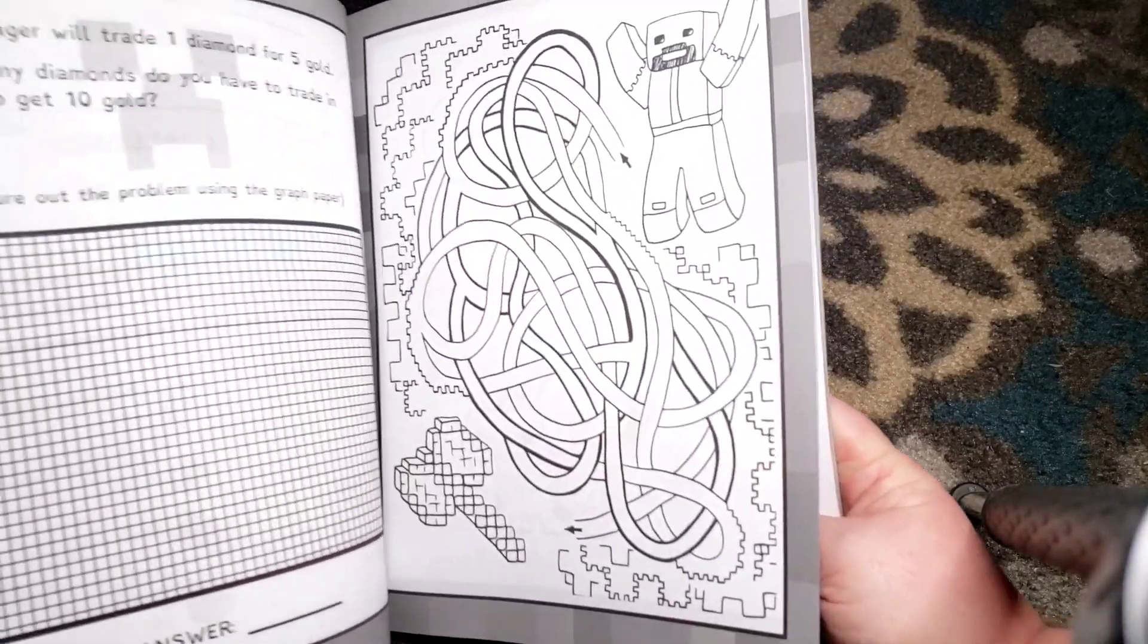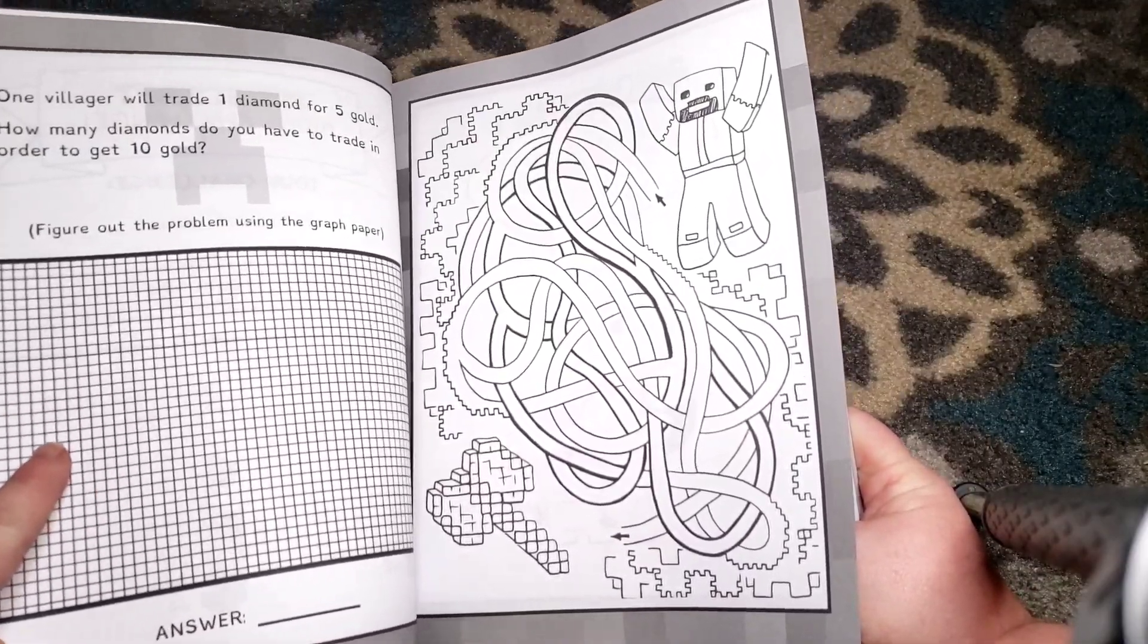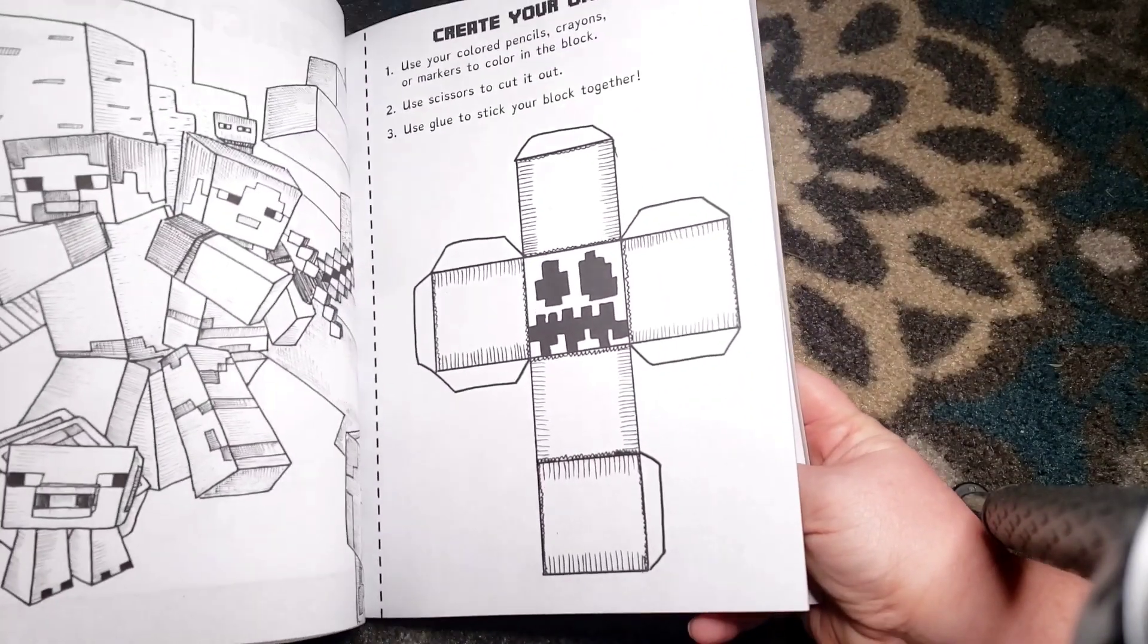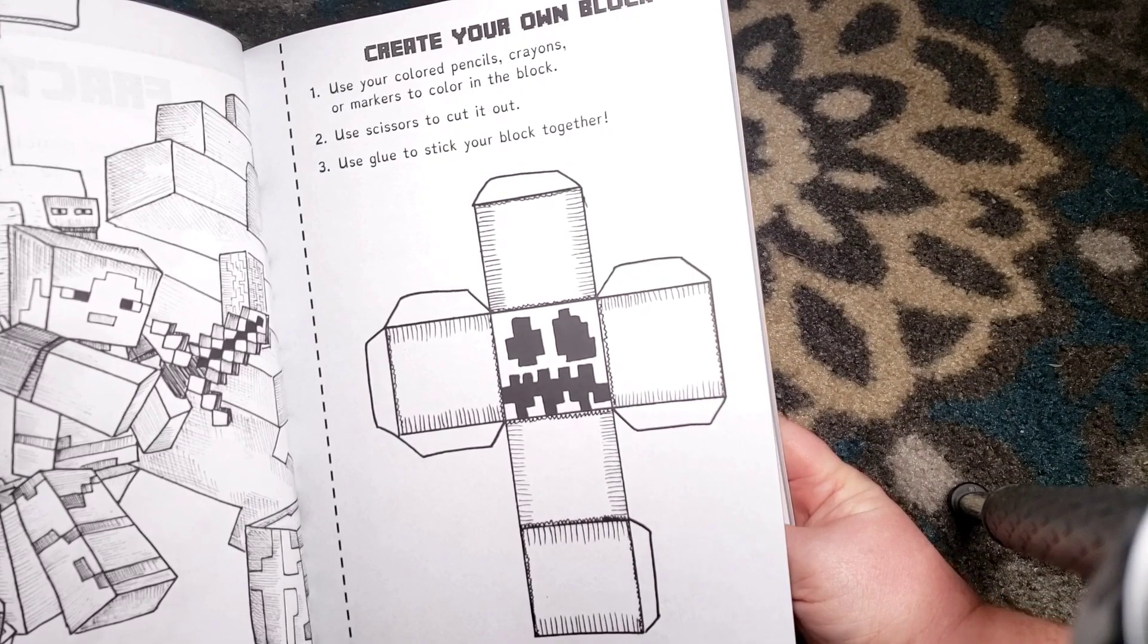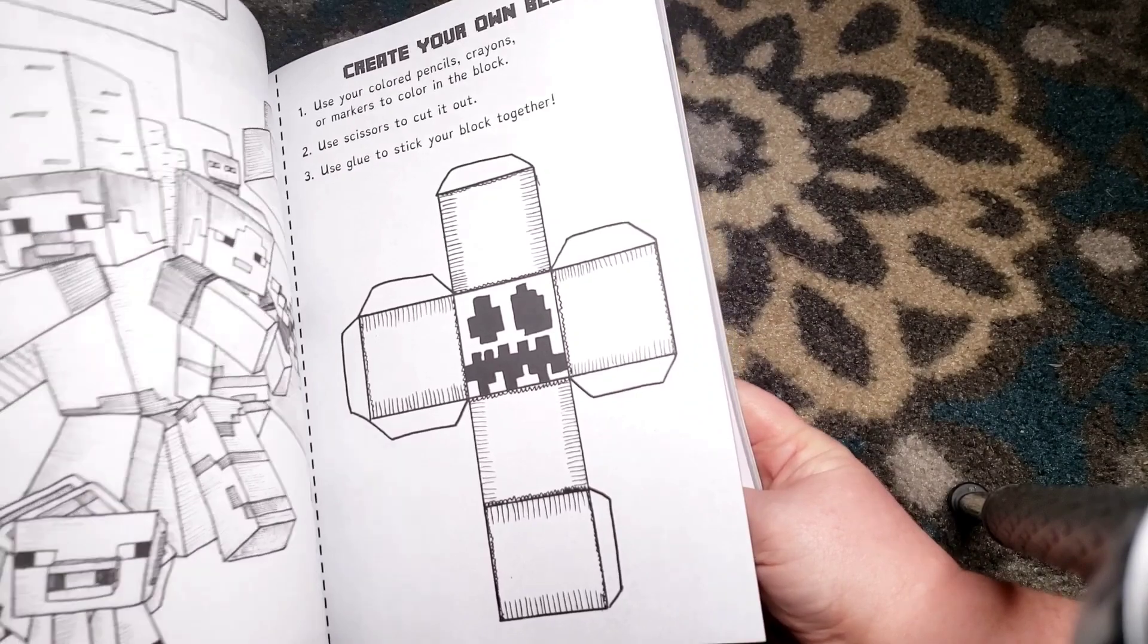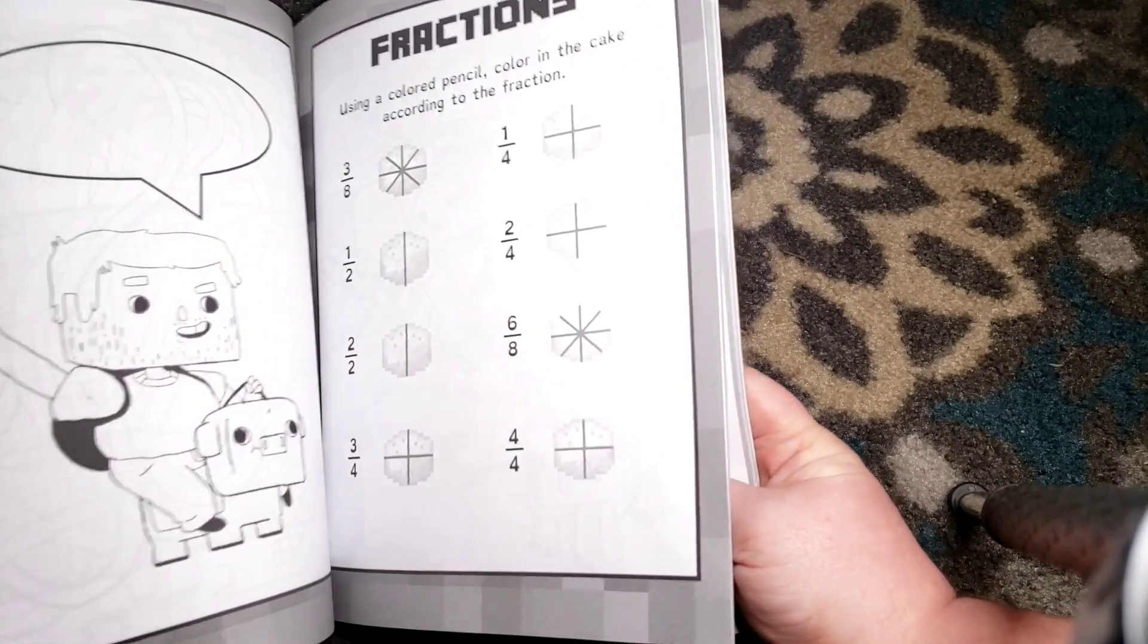Over here it has a word problem and it gives them a graph to figure it out. There's a maze here. We've got a nice coloring page here and a block for them to cut out. Use your colored pencils, crayons, or markers to color in the block, use scissors to cut it out, use glue to stick your block together.